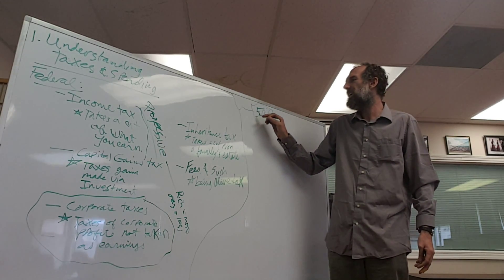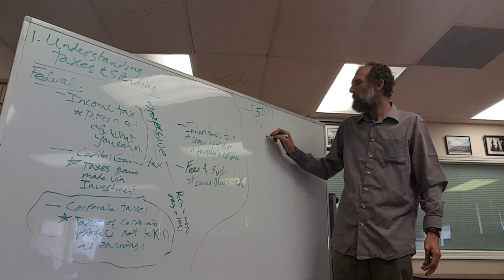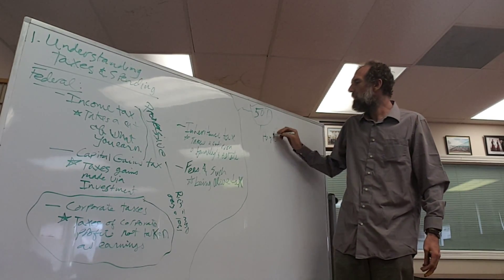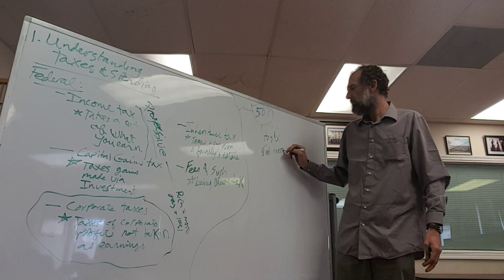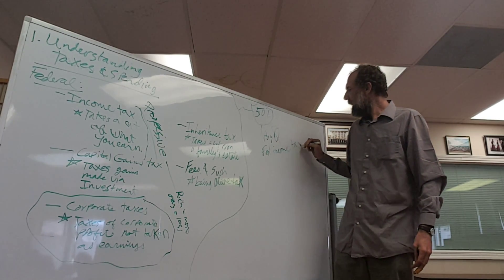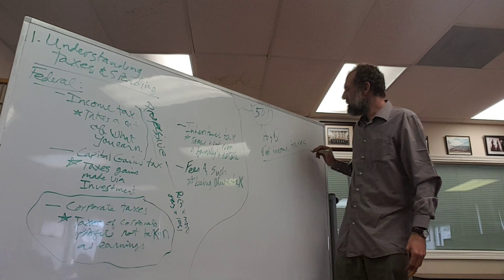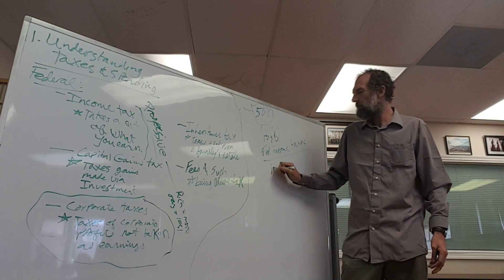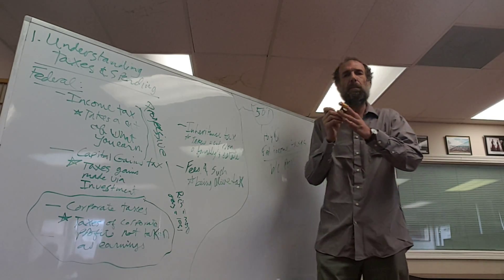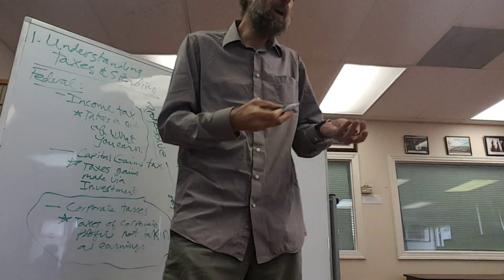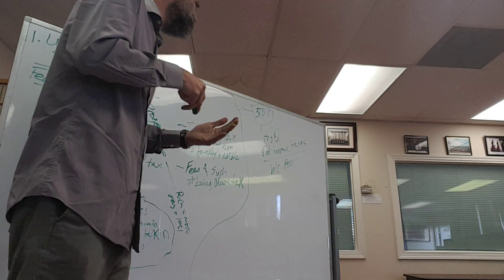Pay zero federal income taxes. Why? Because they are poor. But they're not poor. 50% of Americans aren't poor. Why are 50% of Americans not paying federal income tax? But they're not. 50% of America is not poor.